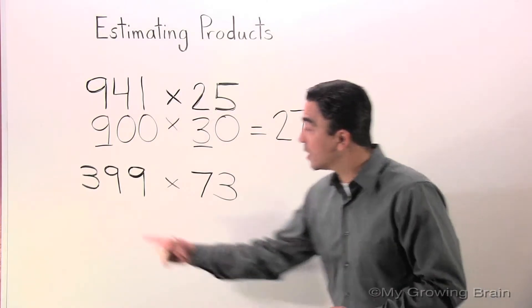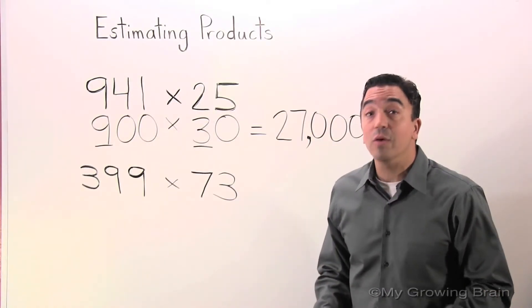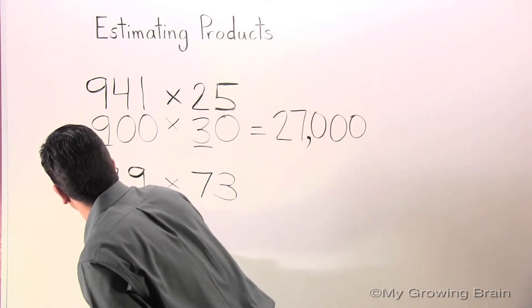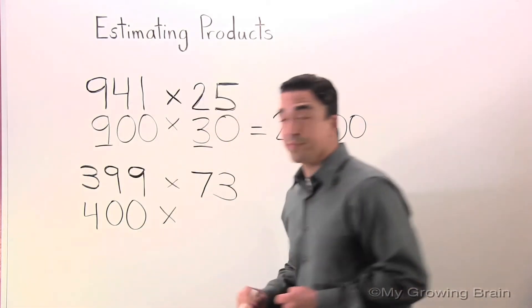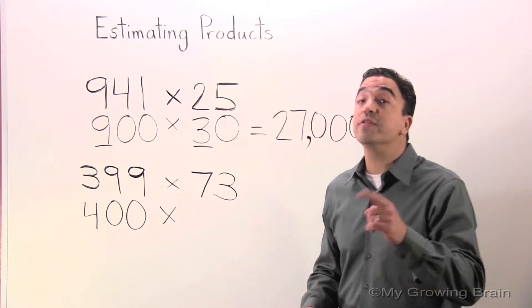Let's go to the next problem. 399. I'm going to round it to the nearest hundred, which is 400. I'm going to round 73 to the nearest ten, which is 70.